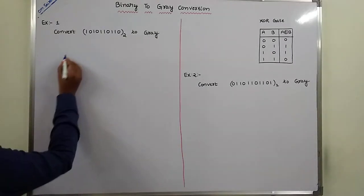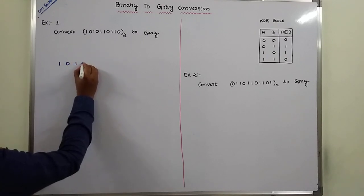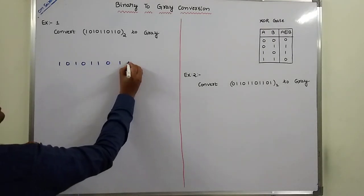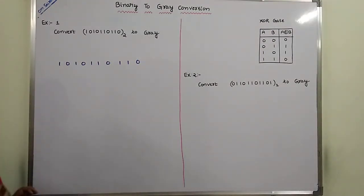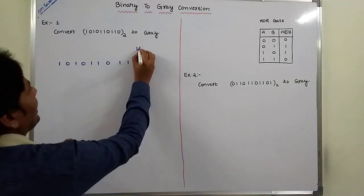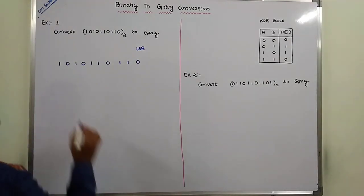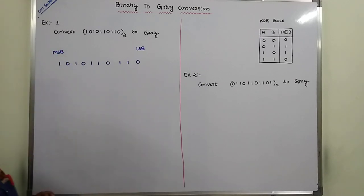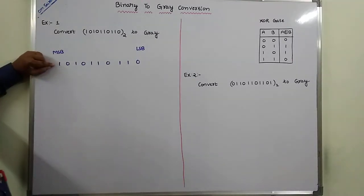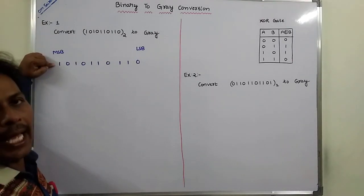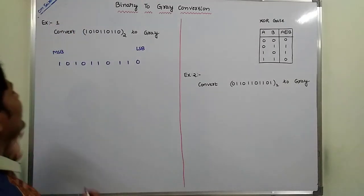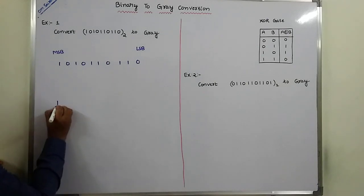The given binary number is 1010110110. This is the LSB bit — the least significant bit — and this is the MSB bit — the most significant bit. Whatever the MSB bit is in the given binary number, the MSB bit is directly written into the grey code. That is 1.